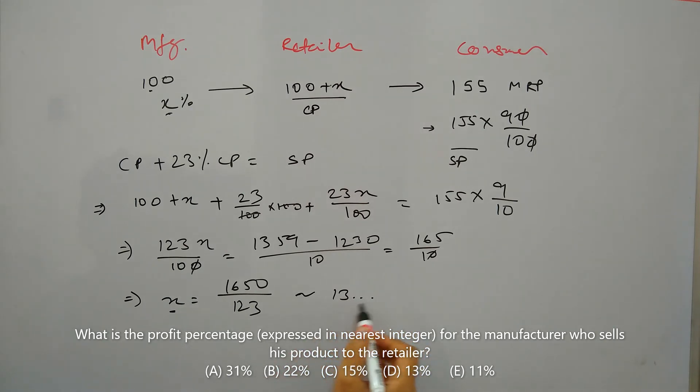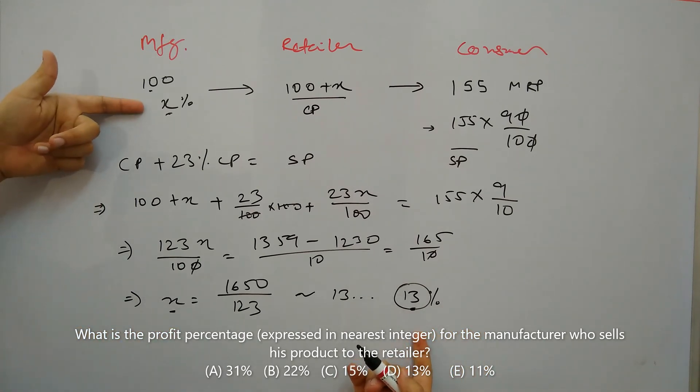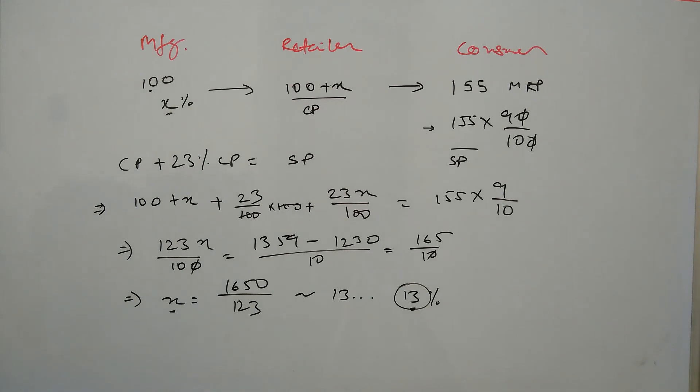In the options, I see the nearest value is 13. So in this case, the profit percentage for manufacturer will be 13%, as the value of X is 13, which we assumed initially as the profit for manufacturer. If you have any doubts or questions, you can post in comments. Thank you.